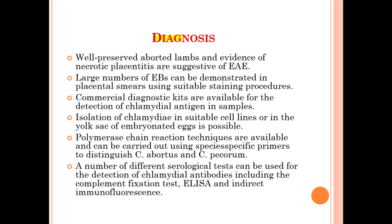For diagnosis, well-preserved aborted lambs and evidence of necrotic placentitis are suggestive of EAE. Large numbers of elementary bodies can be demonstrated in placental smears using suitable staining procedures. Commercial diagnostic kits are available for detection of chlamydial antigen in samples. Isolation of Chlamydia in suitable cell lines or in the yolk sac of embryonated eggs is possible. PCR techniques are available and can be carried out using species-specific primers to distinguish Chlamydophila abortus and Chlamydophila pecorum. Serological tests including the complement fixation test, ELISA, and indirect immunofluorescence test can be used for detection of chlamydial antibodies.